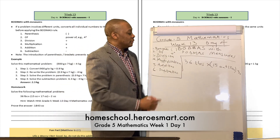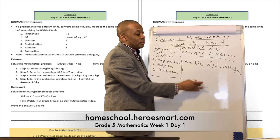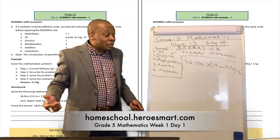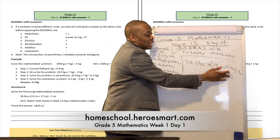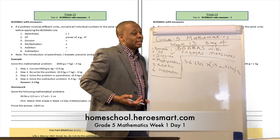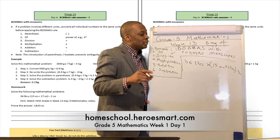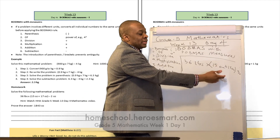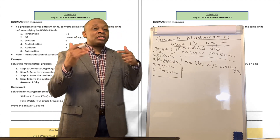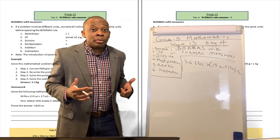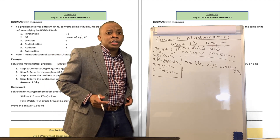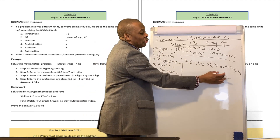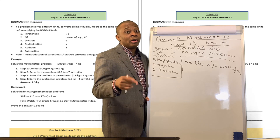We're going to ask ourselves: are there any brackets in this problem? And the answer is yes — there's 15 ounces and 17 ounces. Luckily for us, both numbers have the same units, so we can just go ahead and add them. But if both numbers do not have the same units, you want to make sure you convert them to the same units first. For example, if it were 15 pounds plus 17 ounces, you'd need to make sure those numbers share the same units before performing any operations.